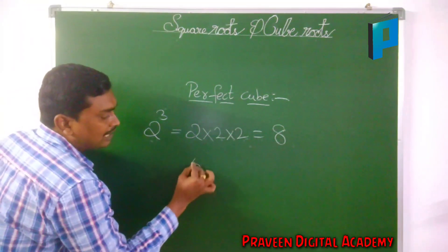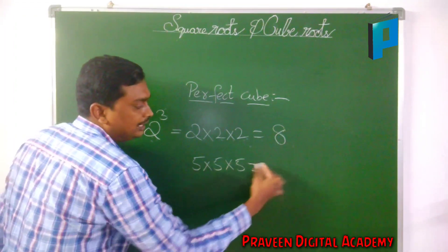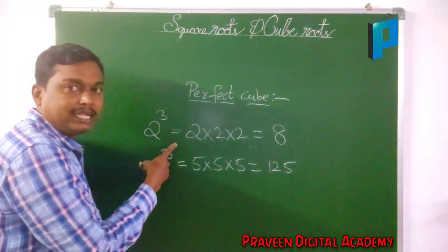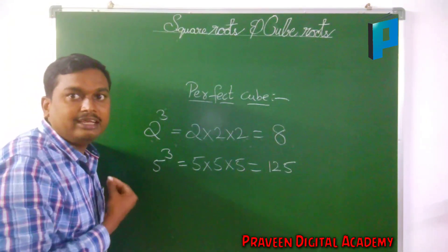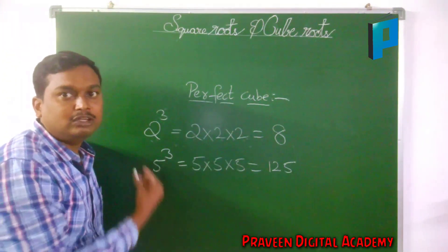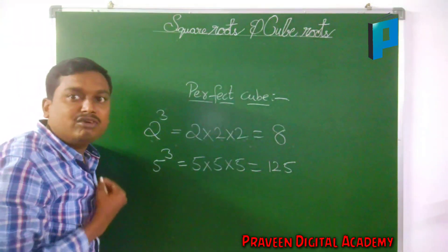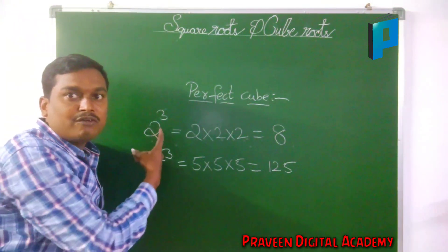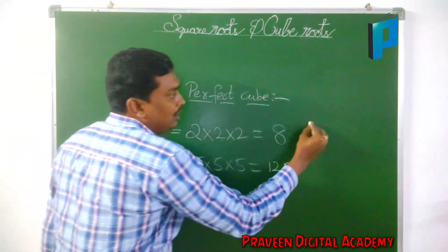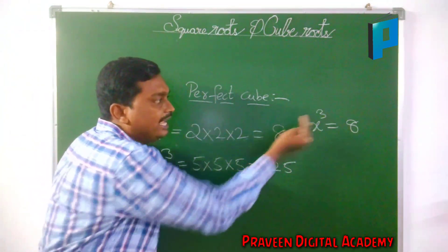Any number multiplied 3 times gives the perfect cube. For example, if you are having 5, multiplied 3 times it gives 125, and this can be said as 5 cube. A perfect cube is any number multiplied 3 times. And cube root means the inverse function of a cube is called the cube root.